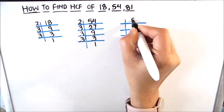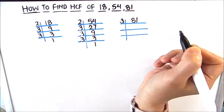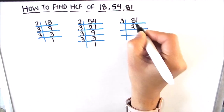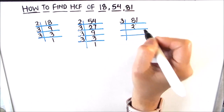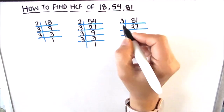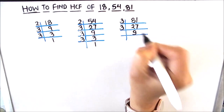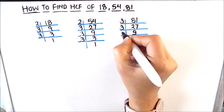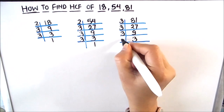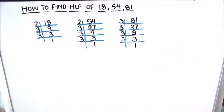Now let's find the factors of 81. 81 is an odd number so it is not divisible by 2. We will divide it by 3. 3 times 27 is 81, 3 times 9 is 27, 3 times 3 is 9, and 3 times 1 is 3. So the factors of 81 are 3, 3, 3, 3, and 1.